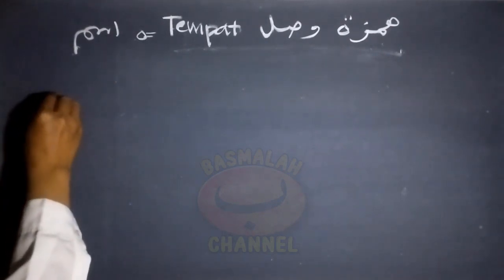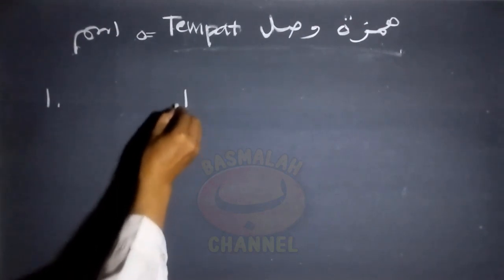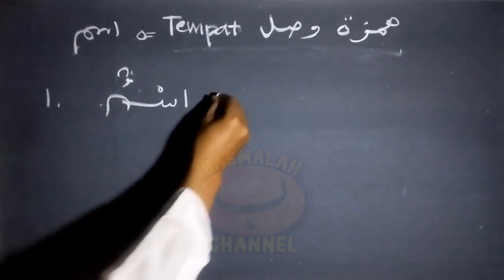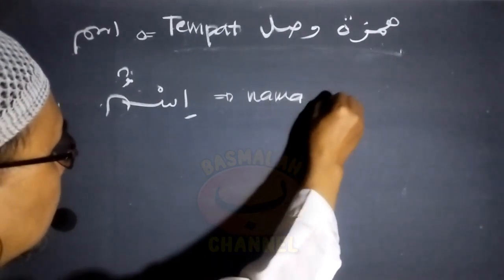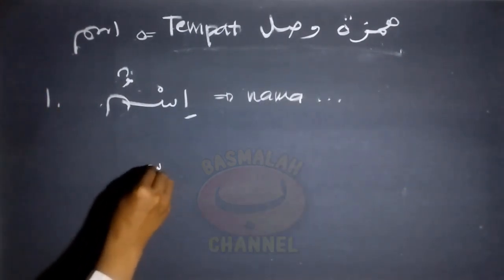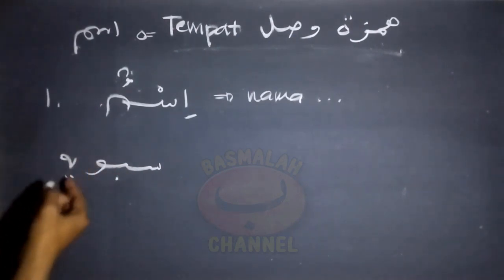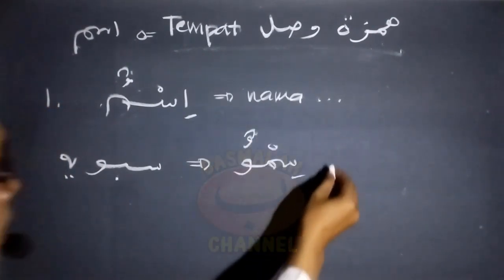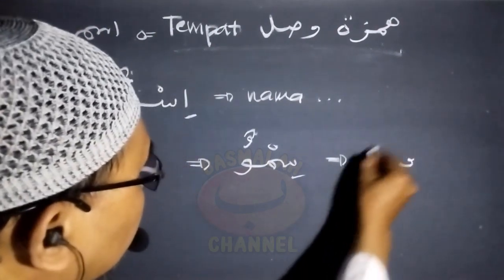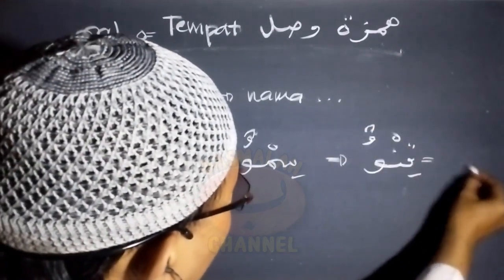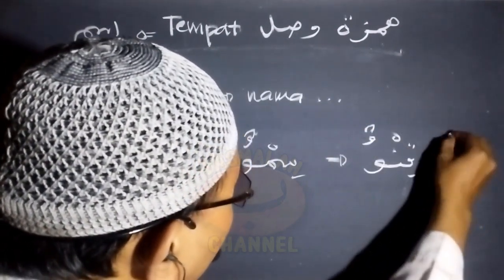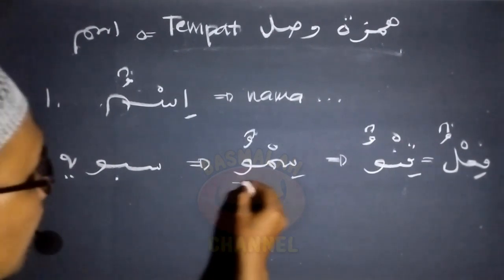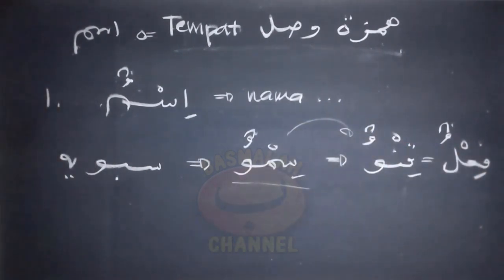Untuk Hamzah Wasol yang berada pada kalimat isim, ini terdapat pada sepuluh tempat. Yang pertama adalah berada pada lafad 'ismun'. Ismun itu bisa bermakna nama. Lafad ismun ini menurut Imam Sibawayhi asalnya adalah 'simmun', sama halnya dengan lafad ismun yang berwazan fi'ilun.